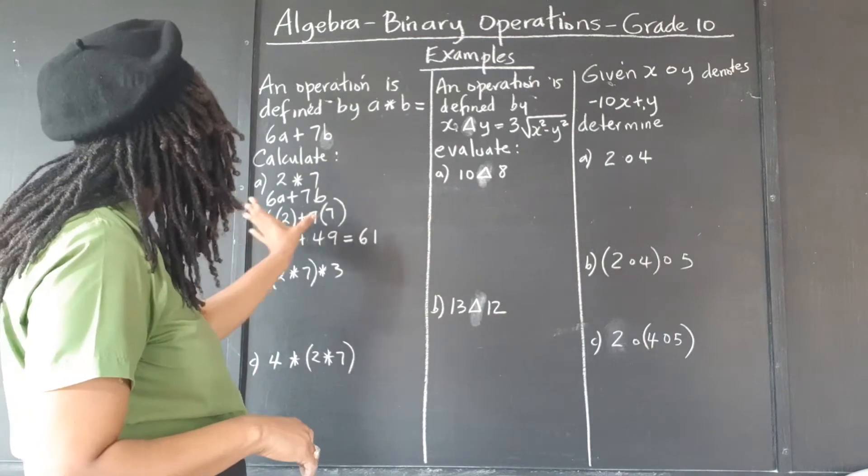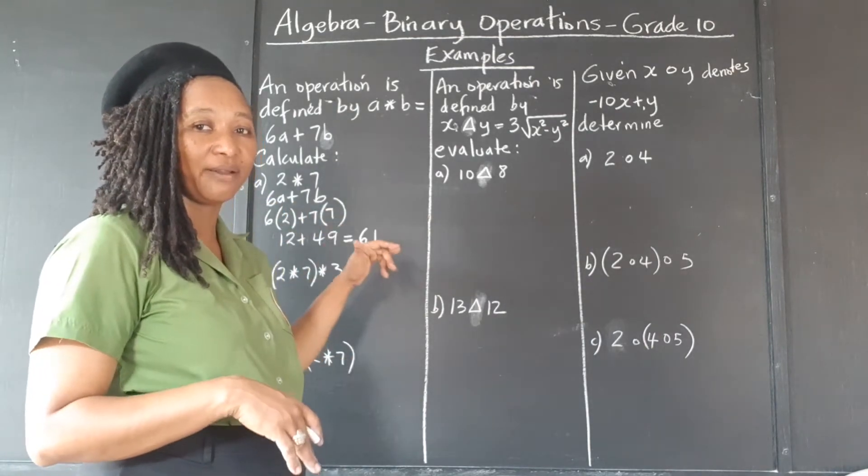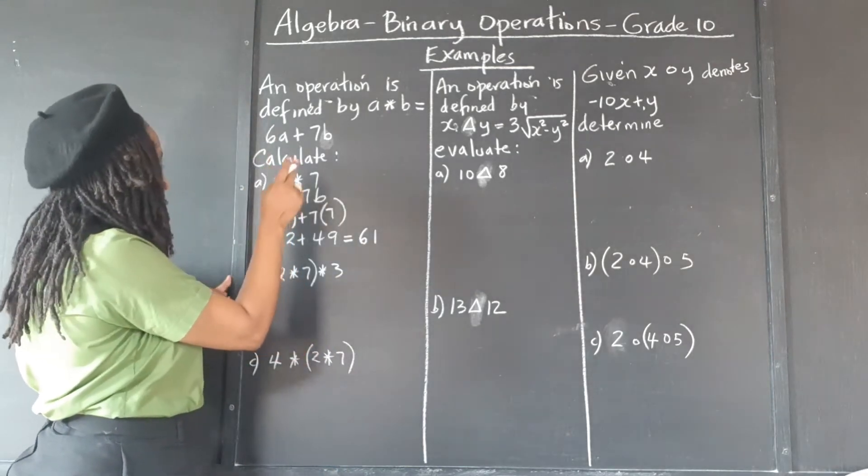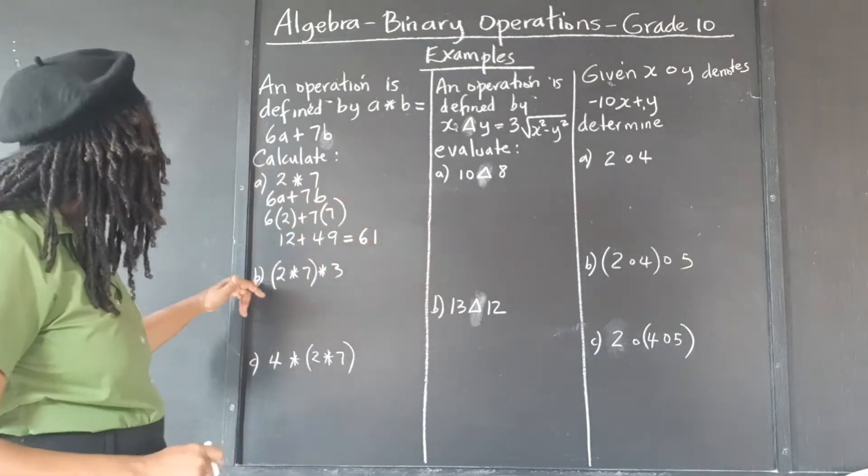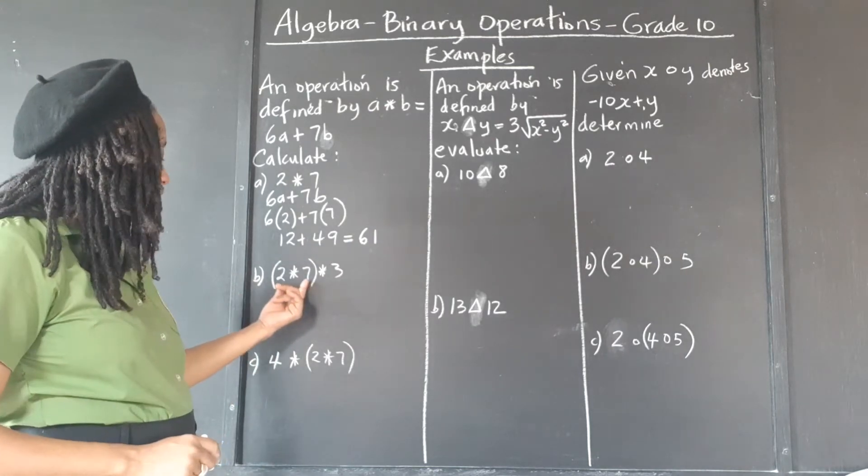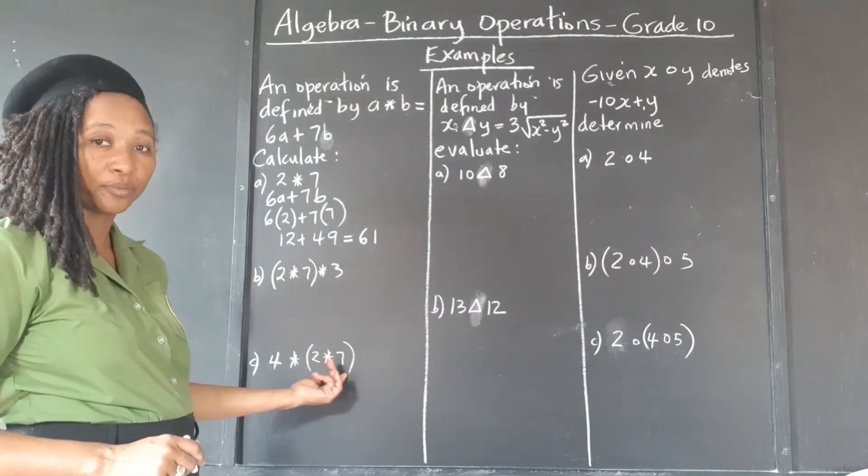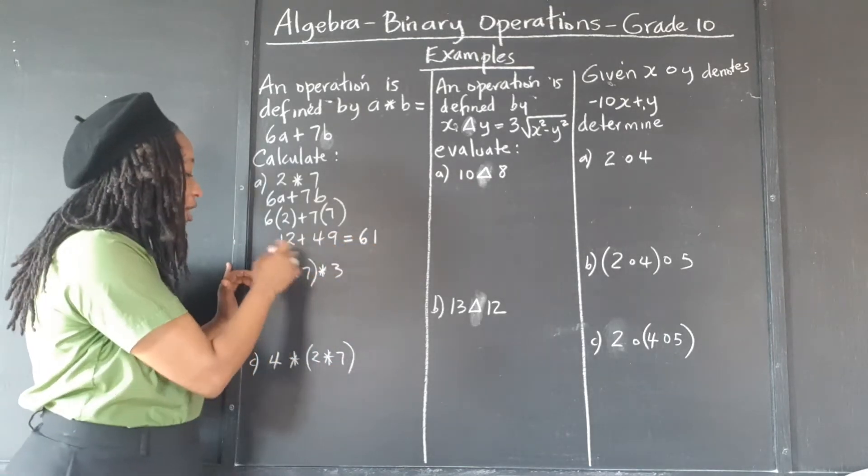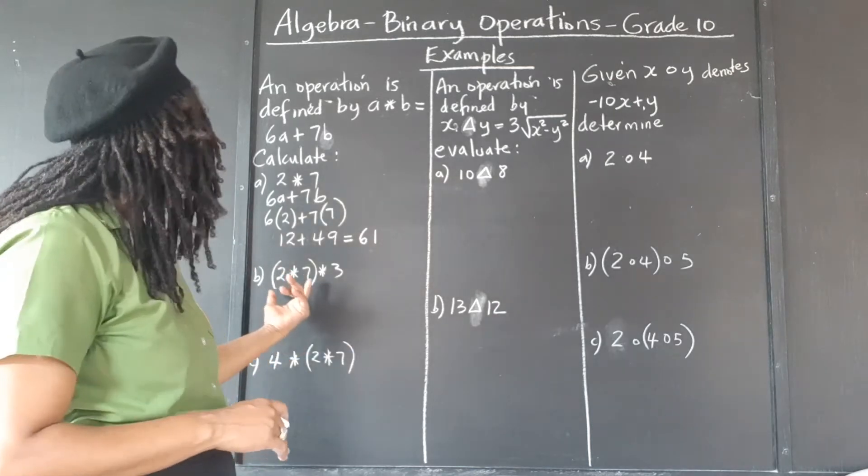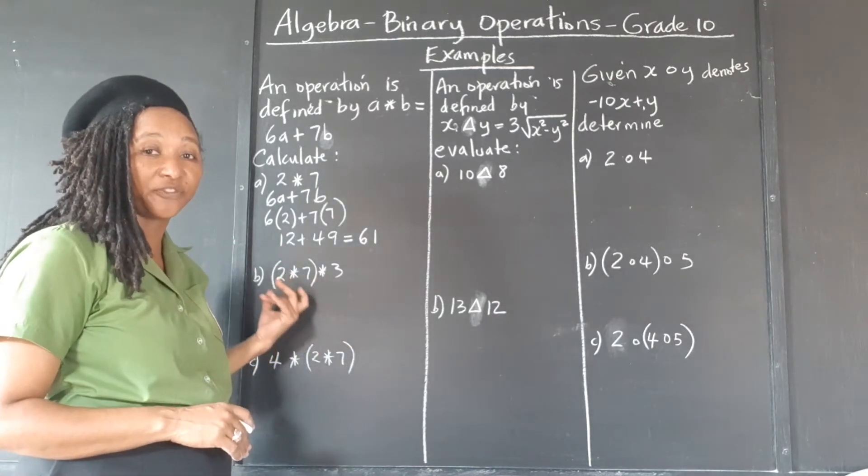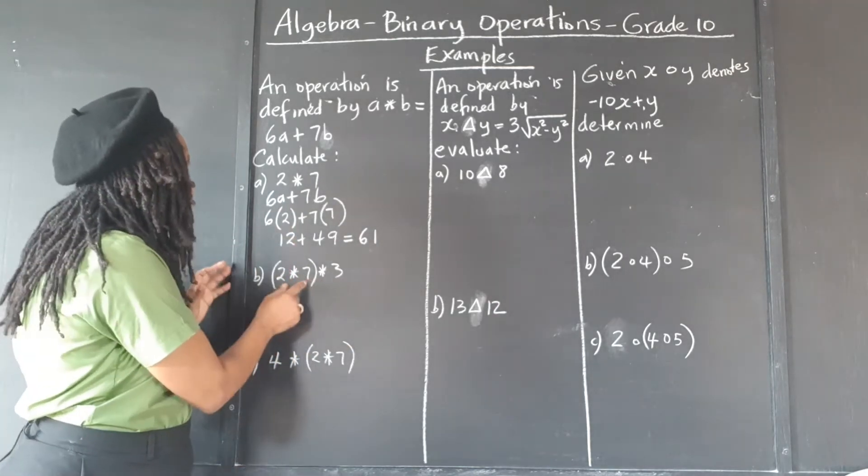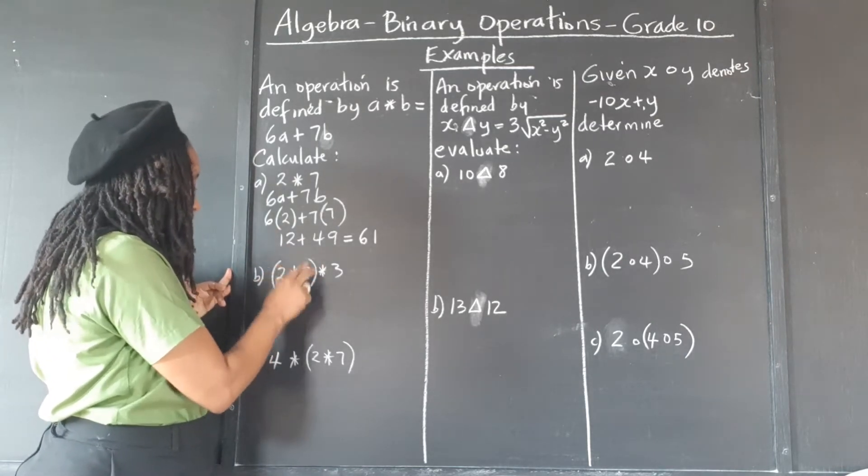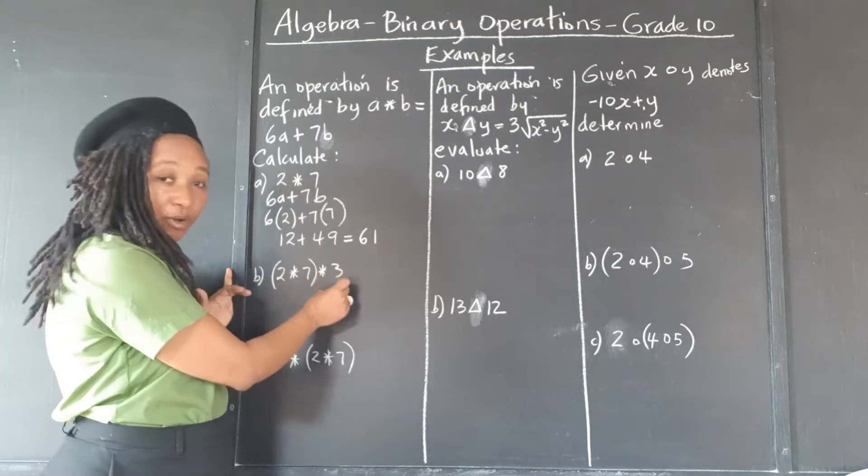So we have combined the two terms to get one final answer. Now since 2 asterisk 7 is 61, and these are asking us to work 2 asterisk 7, we can actually just substitute that 61. We could do it all over again, because if you're given three terms with two brackets, it means work these first. So it would mean substitute 2 for a, 7 for b, and when you get that answer, substitute that for a, and 3 for b.